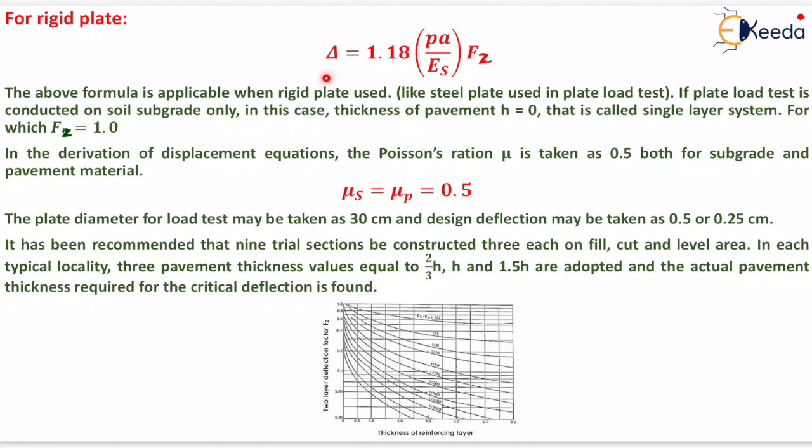For rigid plate delta will be equals to 1.18 Pa upon Es into Fz. The above formula is applicable when rigid plate used, like steel plate used in plate load test. If plate load test is conducted on soil subgrade only, in this case thickness of pavement that is H equals 0, that is called single layer system for which Fz will be equals to 1. In the derivation of displacement equation the Poisson's ratio mu is taken as 0.5 both for subgrade and pavement material. That is mu s equals mu p equals 0.5.